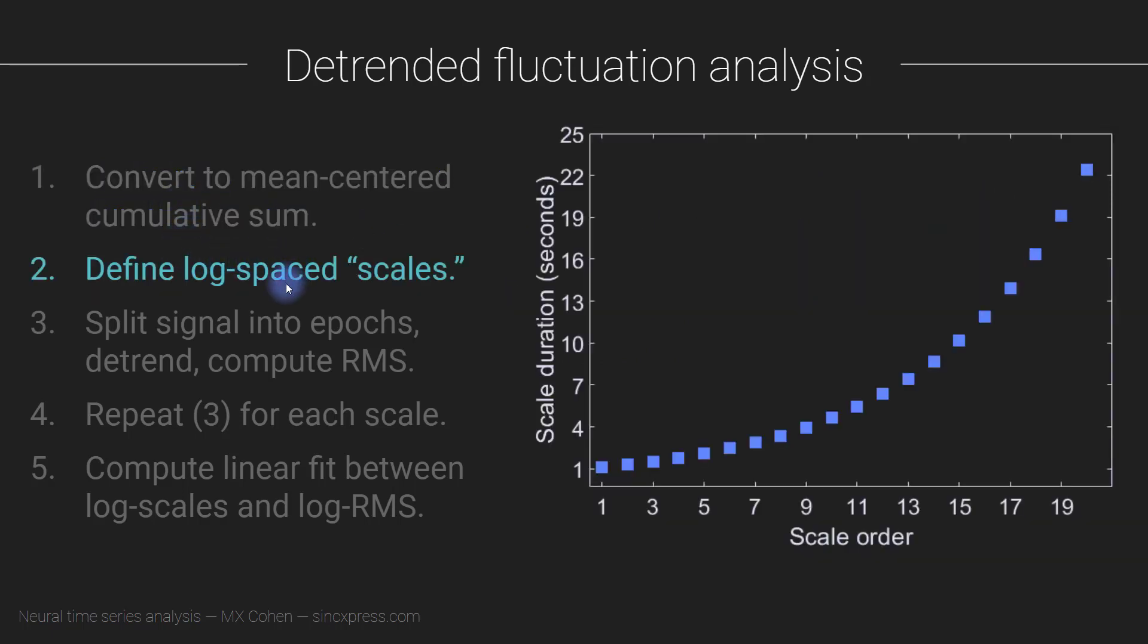Then we have step two, which is to define a number of scales that are logarithmically spaced. So a scale here just refers to a width of time. What you're seeing here is the plot of these scales. In this case, I chose 20 scales. And each scale has a different duration. You can see the first scale is one second, it's a window of one second, and then up to scale 20, which in this case is around 23 seconds or so. So you can see that these scales actually get really long.